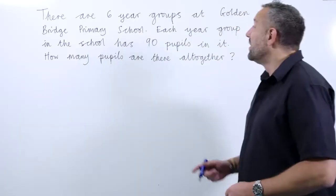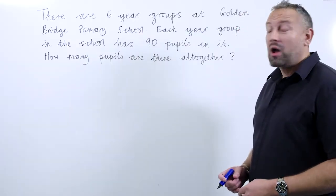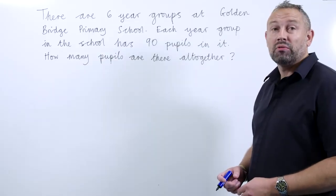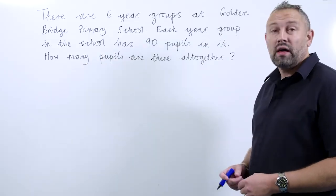Here's the question. There are six year groups at Golden Bridge Primary School. Each year group in the school has 90 pupils in it. How many pupils are there all together?